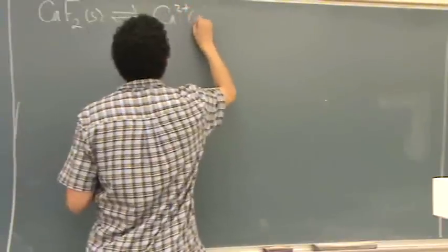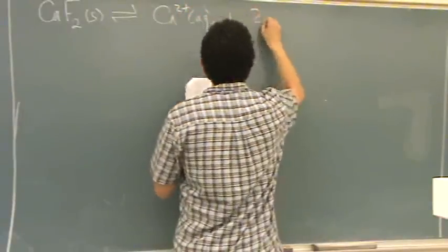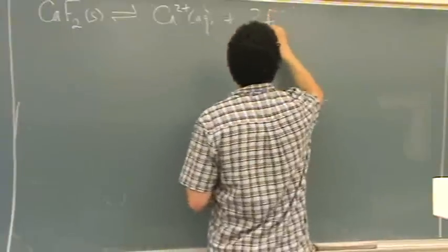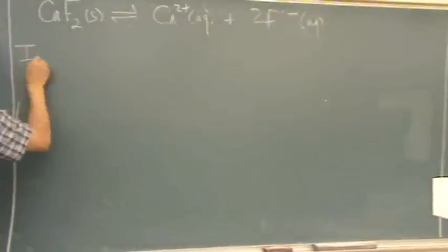So calcium 2+ aqueous plus, well, there's 2 fluorine, so 2 fluorine minus aqueous. We're going to do our ICE table as normal.